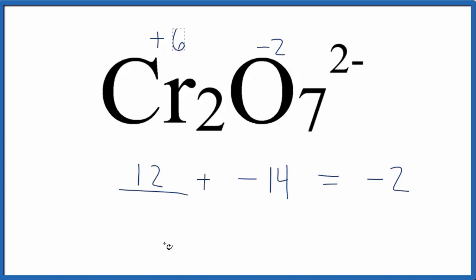You can set it up like an algebraic equation. You could have said 2x plus the minus 14 equals minus 2. And when you solve this again, you'll get that plus 6, which tells you that the chromium has an oxidation number of plus 6.